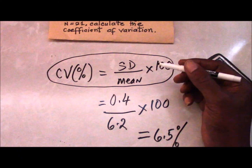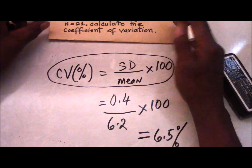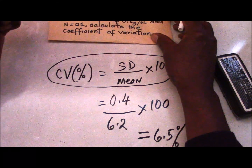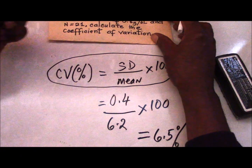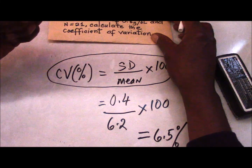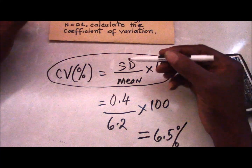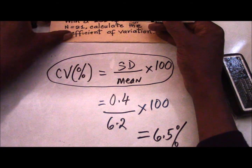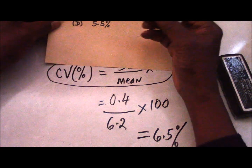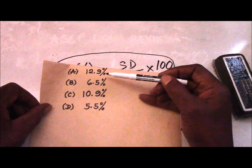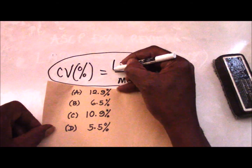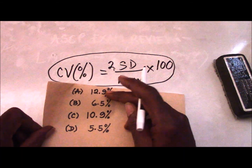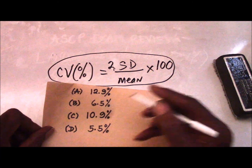I deliberately put 2 SD here rather than 1 SD, and so it requires that you be careful. The exam requires that you come in calm and composed, and that you think critically. If you knew this formula but didn't pay attention to detail — the detail being that this is 2 SD — and you used 0.8 directly, you would get 12.9%, which is incorrect. That answer is for those who did not notice it was 2 SD. The correct answer is 6.5%, which is answer B.